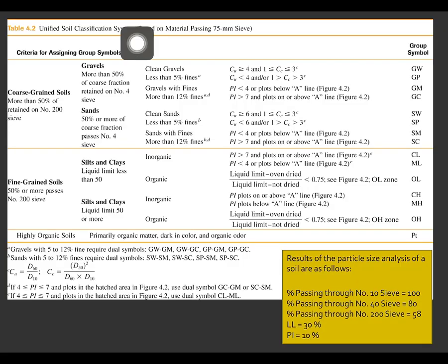First, we shall read this chart from left to right. So, let us first identify if it is a coarse grain soil or a fine grain soil. A soil is considered as a coarse grain soil if it has more than 50% retained on number 200 sieve.